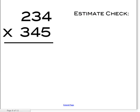Okay, this one's going to be a little harder because it's a 3-by-3 multiplication problem, so it's going to take a little longer. You might want to write in smaller numbers. First, 5 times 4 equals 20, so you put the zero here and carry the 2 here.